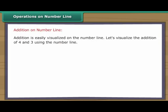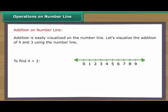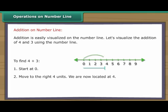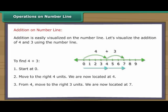Operations on number line. Addition is easily visualized on the number line. Let's visualize the addition of four and three. To find four plus three: one, start at zero. Two, move to the right four units — we are now located at four. Three, from four, move to the right three units — we are now located at seven. Thus, four plus three is equal to seven.